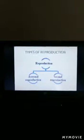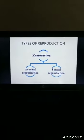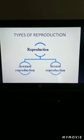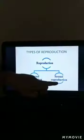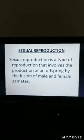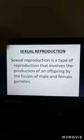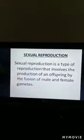Reproduction takes place in organisms mainly asexually or sexually. On the basis of this, reproduction is of two types: asexual reproduction and sexual reproduction. Sexual reproduction is a type of reproduction that involves the production of an offspring by the fusion of male and female gametes.